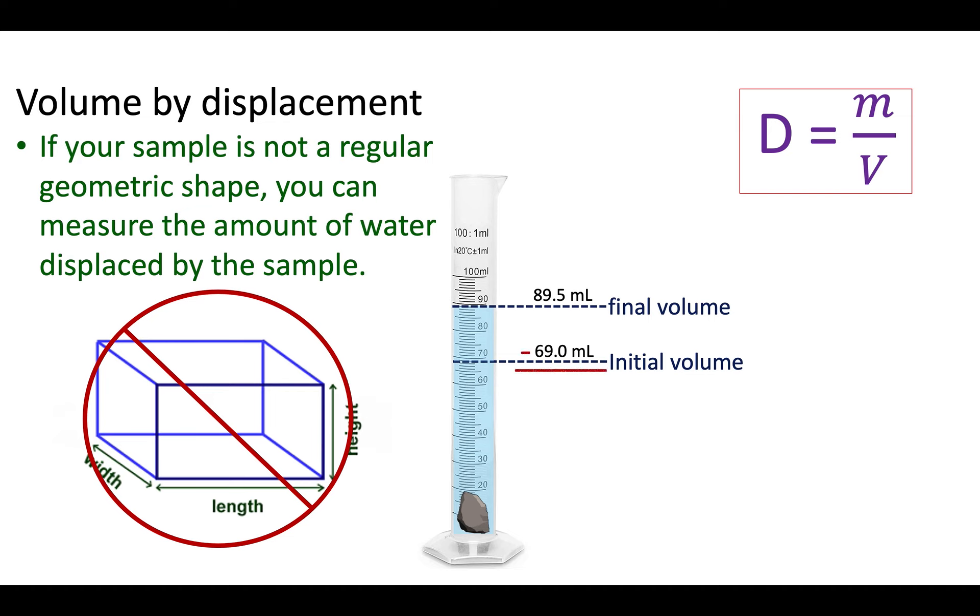So all you have to do is find the difference by subtracting the initial from the final volume. In this case, 20.5 milliliters. And that is the volume of the sample.